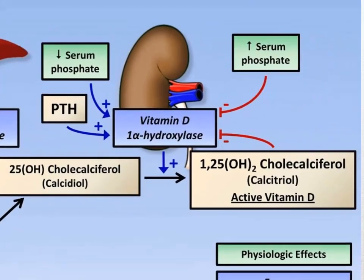We can get vitamin D from the diet — dairy, certain fish — but we also need it from sunlight because dietary intake alone is not enough. If you're taking calcium but don't have vitamin D in your body, you're not going to absorb it. The main thing vitamin D does is help absorb calcium in the small intestine into the bloodstream. That's what calcitriol does — it helps to absorb calcium.